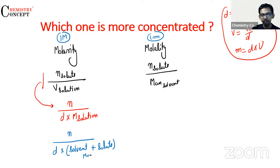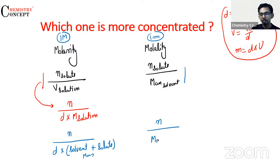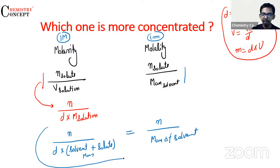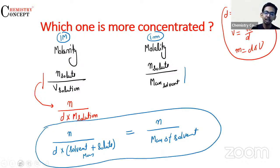Doosri taraf jo hamari molality hai, usko aise rehne dete hain. It is number of moles of solute divided by mass of solvent. Aur class, dono ki value equal hai — one molal aur one molar. Ab dono ko compare karte hain.